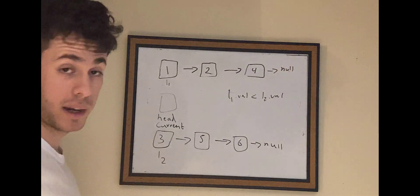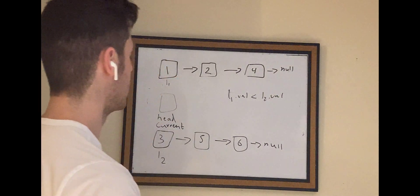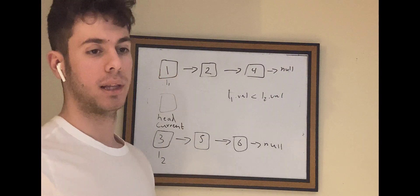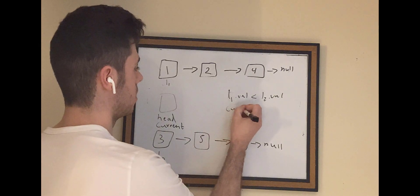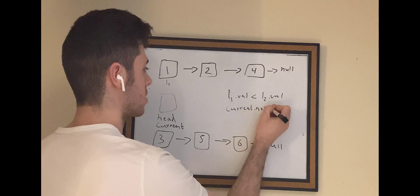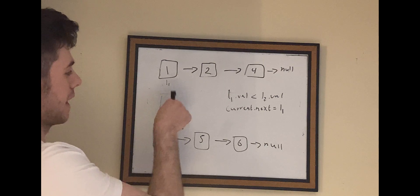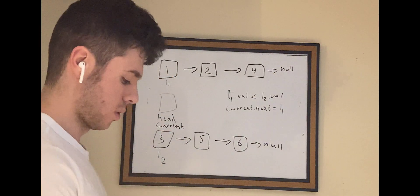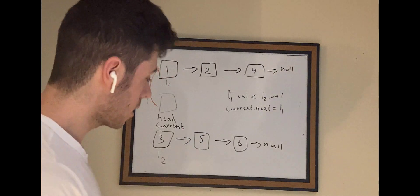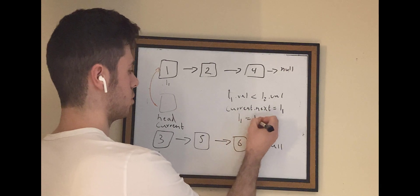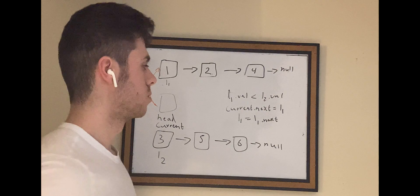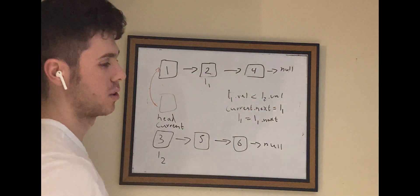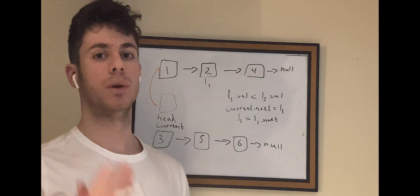In this case, is 1 less than 3? It is. So what we do is set the next node to be equal to L1, because 1 is less than 3, so naturally the next node in our linked list should be L1. So we say current.next is equal to L1. The next thing we do is set L1 equal to L1.next — essentially moving the L1 pointer to the next node in that linked list, keeping track of what we've already gone through.